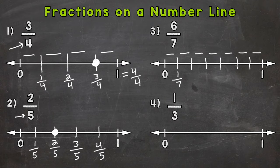So we start with one-seventh, two-sevenths, three, four, five, six, and seven-sevenths would be one whole. So six-sevenths is right here.